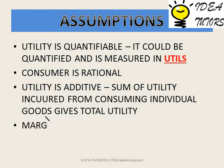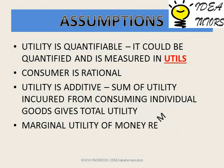The fourth assumption is that the marginal utility of money remains constant. Marginal utility of money is the utility of a single unit of money — for example, one rupee or one dollar. Under this approach, we assume that this marginal utility of money stays the same.